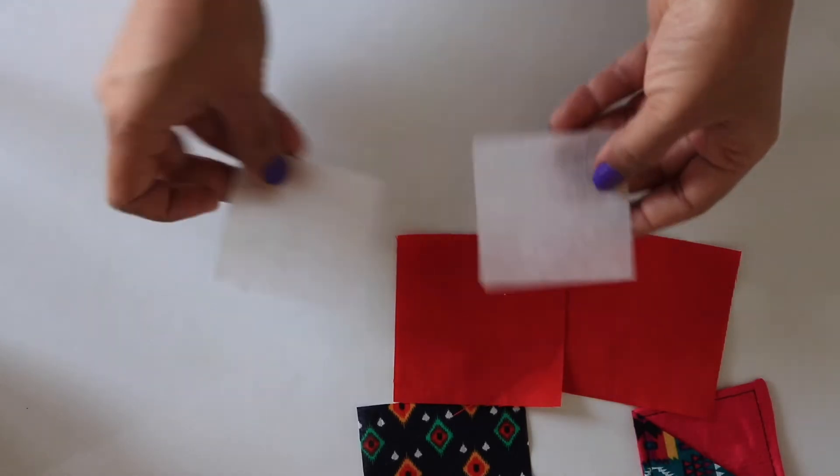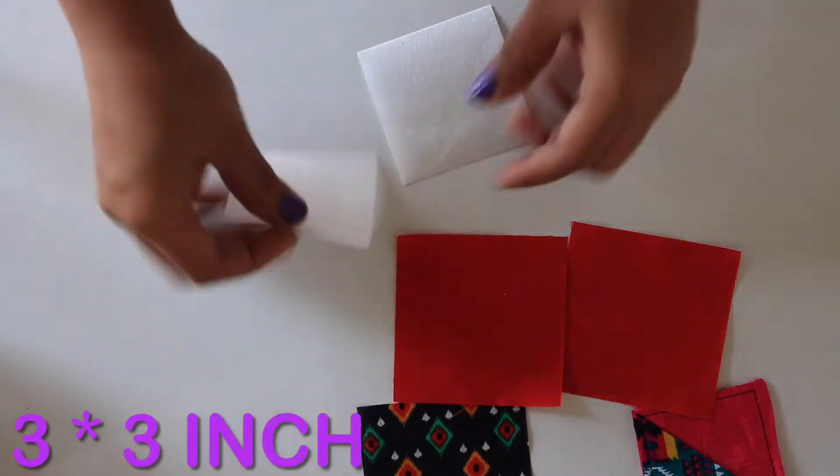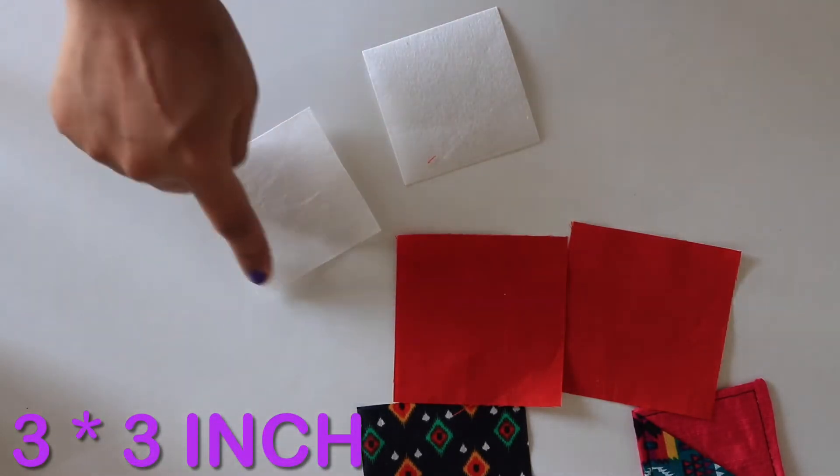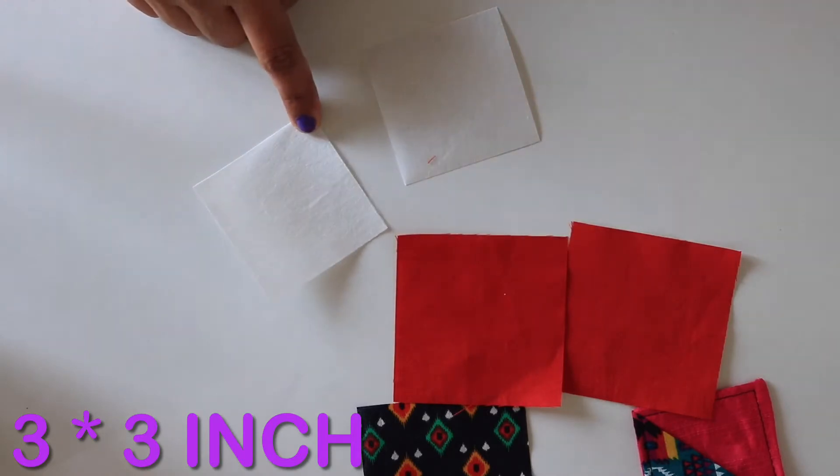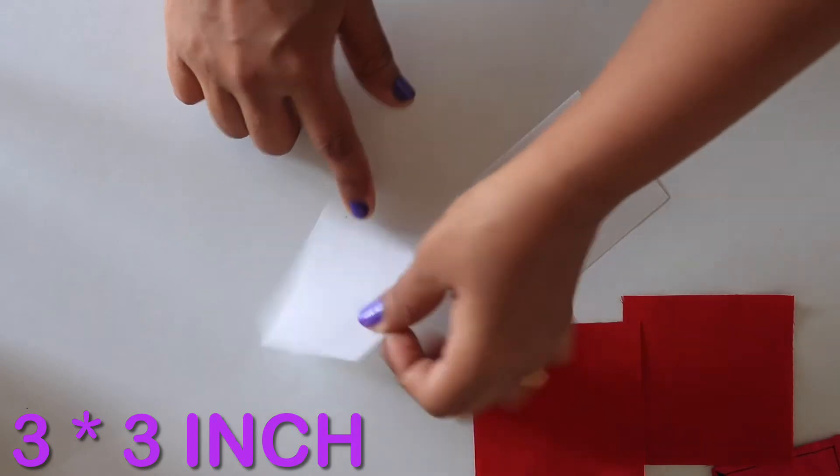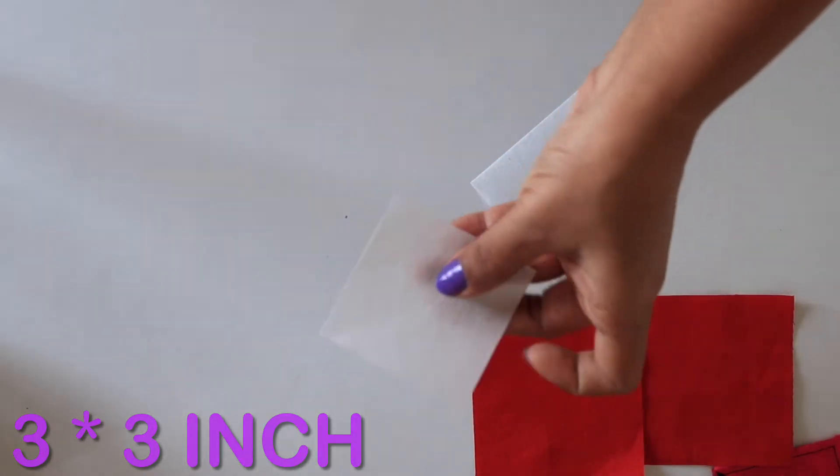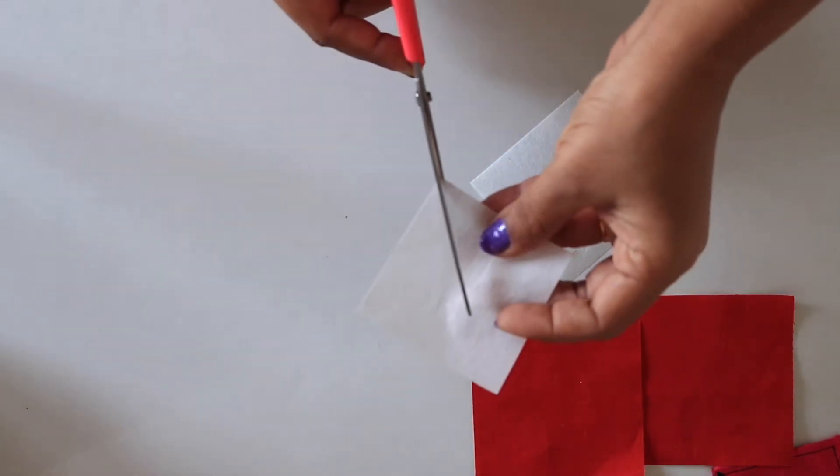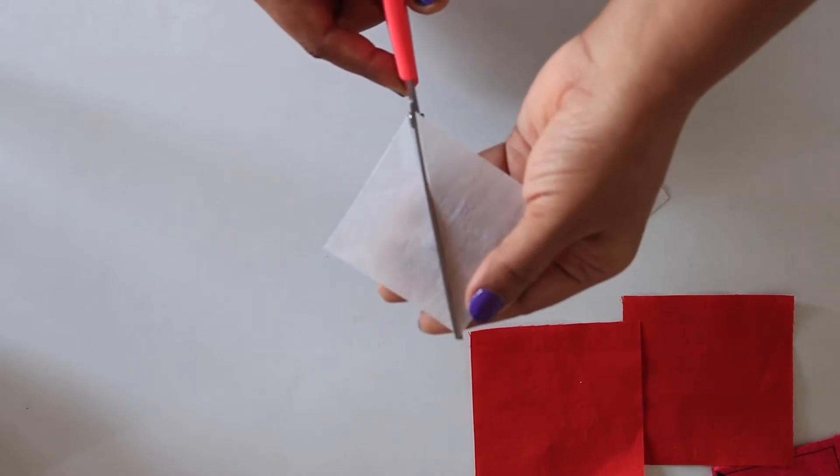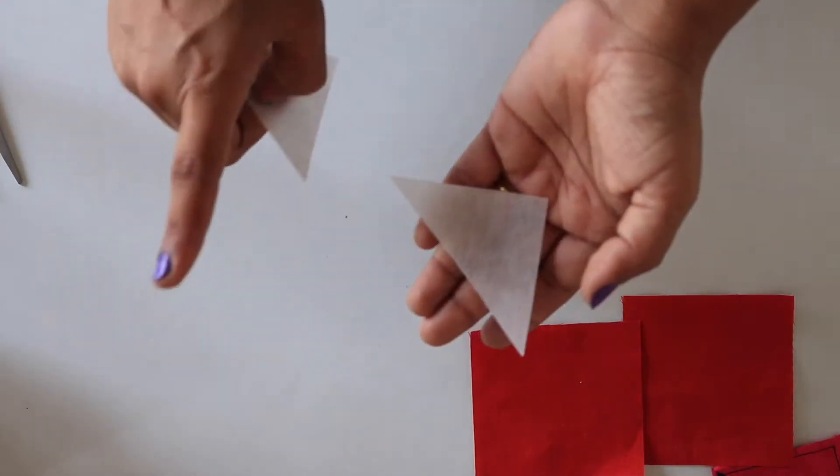Second thing you will need is lightweight interfacing like shape flex. Cut 2 squares out of it and they will be half inch smaller than your fabric squares. Cut 1 square of interfacing in half diagonally. Then you will have 2 triangles. You will only use 1 triangle and save the second to make another bookmark.